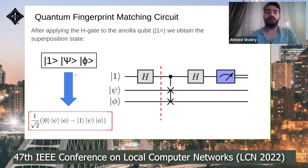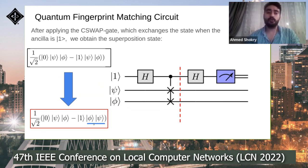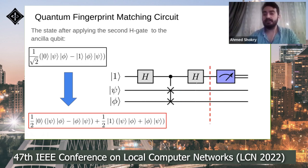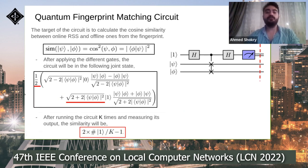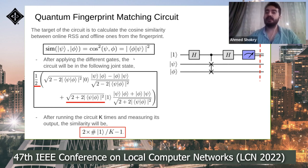Starting with input |1⟩|ψ⟩|φ⟩, we apply the first Hadamard gate, creating superposition (1/√2)|0⟩|ψ⟩|φ⟩ − (1/√2)|1⟩|ψ⟩|φ⟩. Then we apply the controlled-SWAP gate, which exchanges |ψ⟩ and |φ⟩ when the ancilla qubit is one. Then we apply the second Hadamard gate, and finally normalize the system state. The probability of measuring one on the ancilla qubit is a function of the cosine similarity. After running the circuit k times, similarity = 2 × (number of ones / k) − 1.